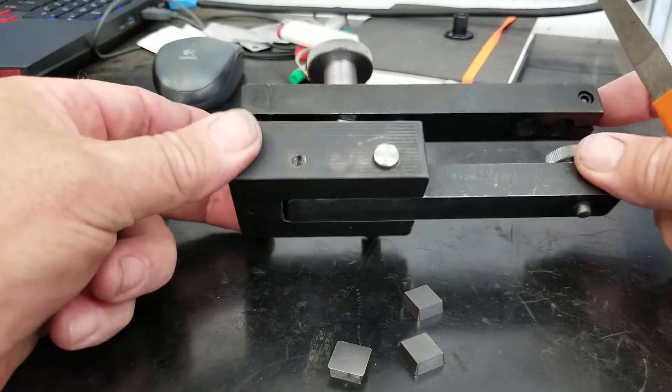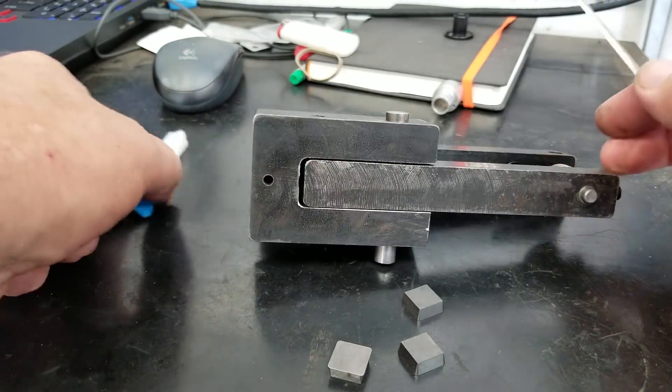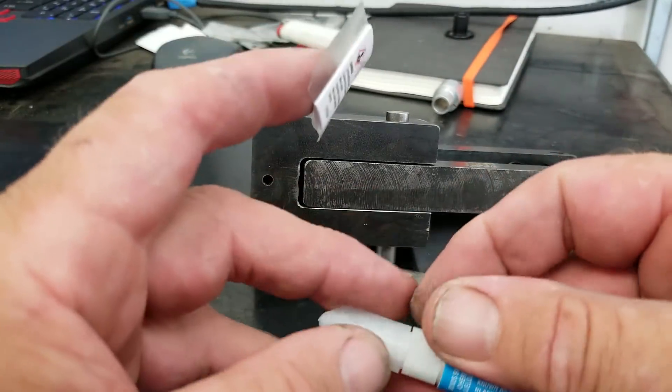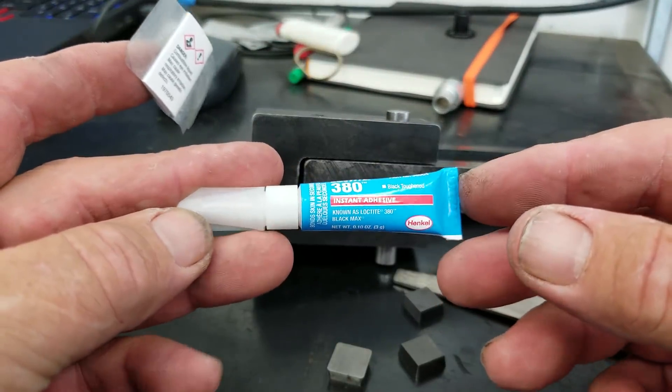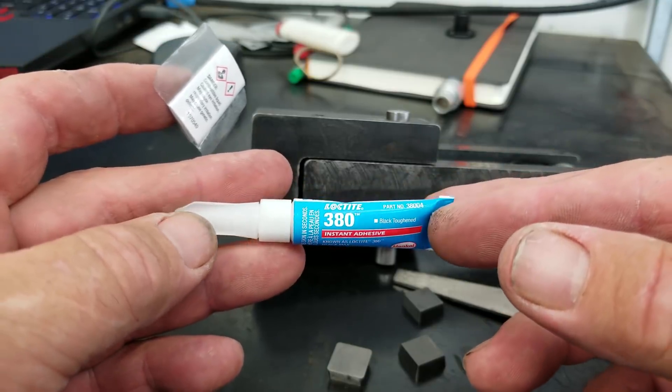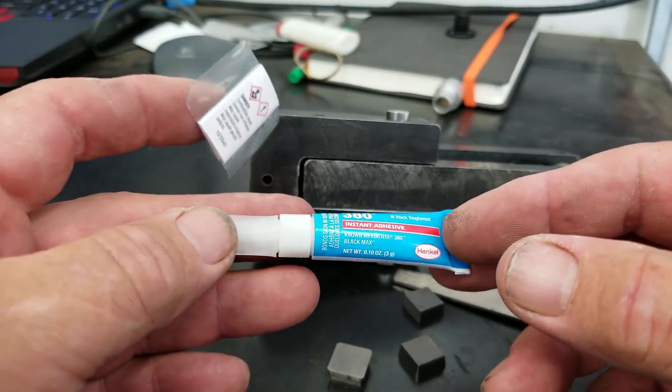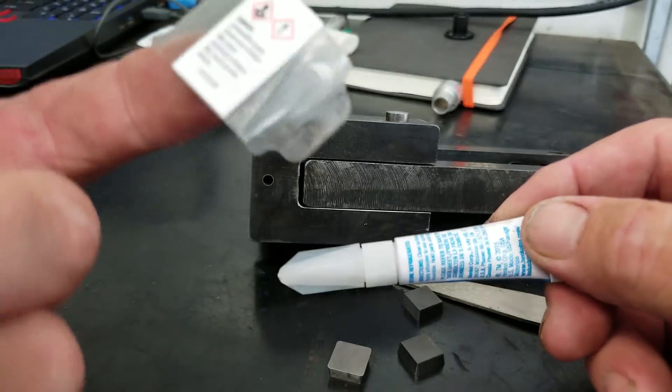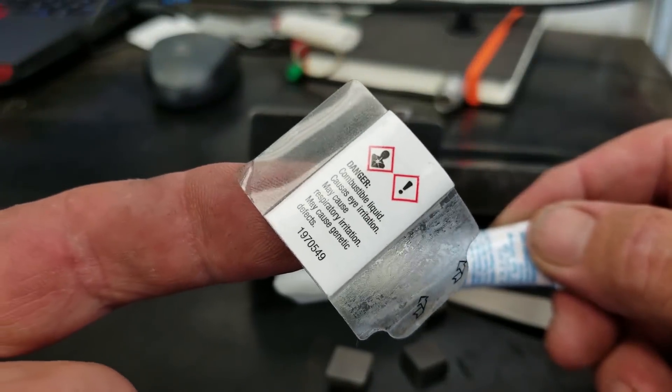Then we're going to glue them on and probably just use the weight of the thing to hold those feet in place. If you look up the properties of the 380, it's got a high shear strength and they call it a heavy bodied compound. I believe it's black.